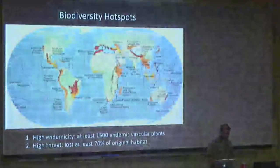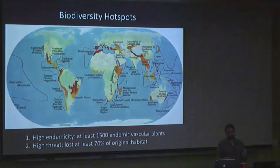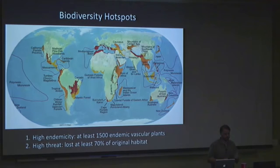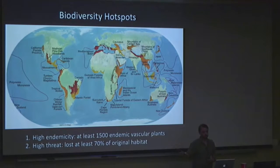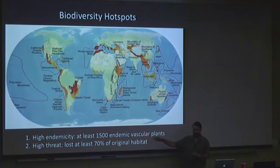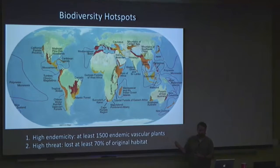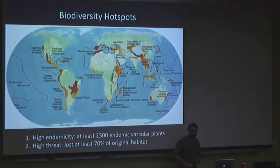A lot of my research is motivated by the idea of biodiversity hotspots. That phrase gets thrown around in conservation biology all the time, often without people recognizing there's a very explicit definition. Defined by Conservation International, biodiversity hotspots are places with incredibly high endemicity — at least 1,500 endemic vascular plant species found there and nowhere else in the world. We count vascular plants because plants don't move and are easier to count. And for those areas of incredible biodiversity, there must also be a really high threat — at least 70% of the original habitat has been lost.